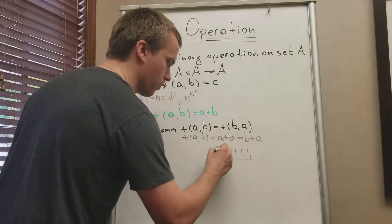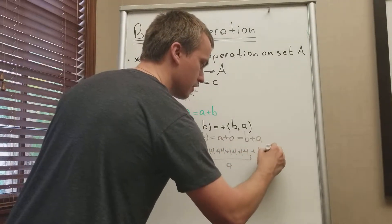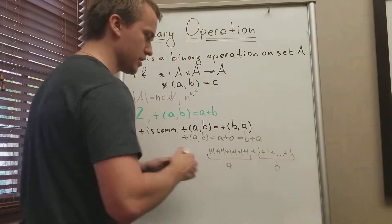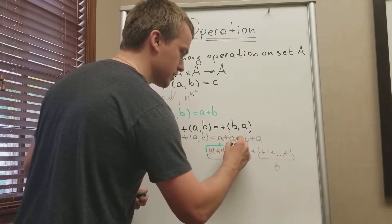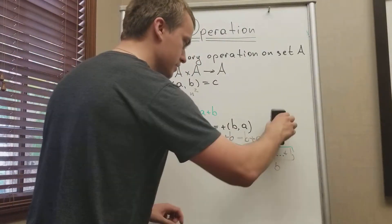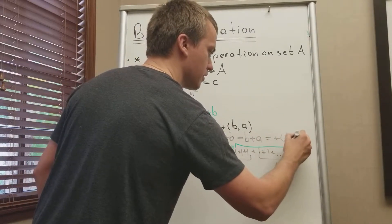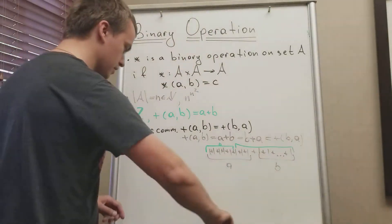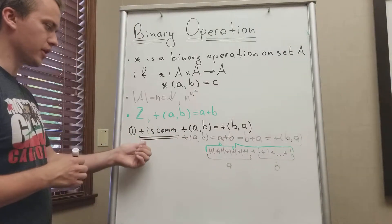If A and B are just finite numbers, we can write A as a sum of ones A times, and B as a sum B times. Then we can move B to the front, and this part must be equal to A. So B times plus A equals the operation of B and A, which is B plus A. Therefore plus is commutative.